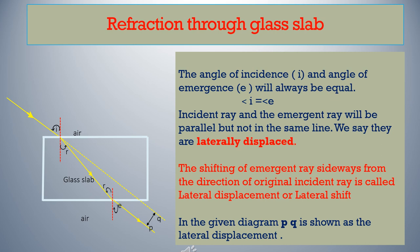But the incident ray will not be in the same line as the emergent ray. The incident ray and emergent ray will be parallel to each other — we say the incident ray is laterally displaced, displaced sideways. The shifting of the emergent ray sideways from the direction of the original incident ray is called lateral displacement or lateral shift. In the given diagram, the width PQ is known as the lateral displacement.